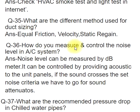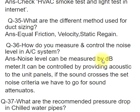Q36: How do you measure and control the noise level in an A/C system? ANS: Noise level can be measured by a dB meter. It can be controlled by providing acoustic treatment to unit panels. If sound crosses the set noise criteria, we have to go for sound attenuators.